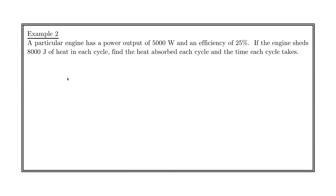One particular engine has a power output of 5,000 watts and an efficiency of 25%. If the engine gives off 8,000 joules of heat every single cycle, find the heat absorbed each cycle and the time each cycle takes. We know the power, the efficiency, and QC equals 8,000 joules — that's how much heat the engine is giving off.